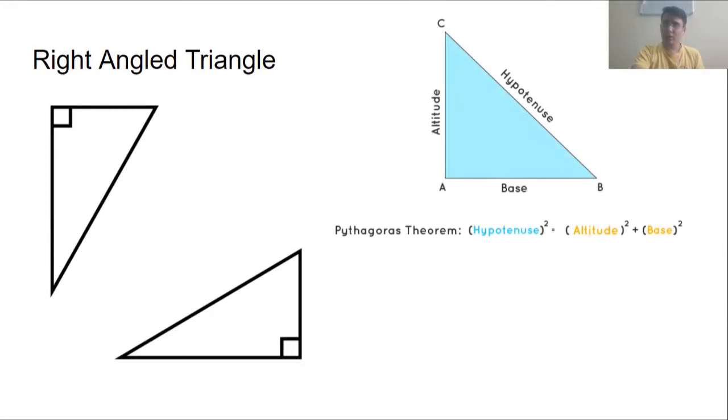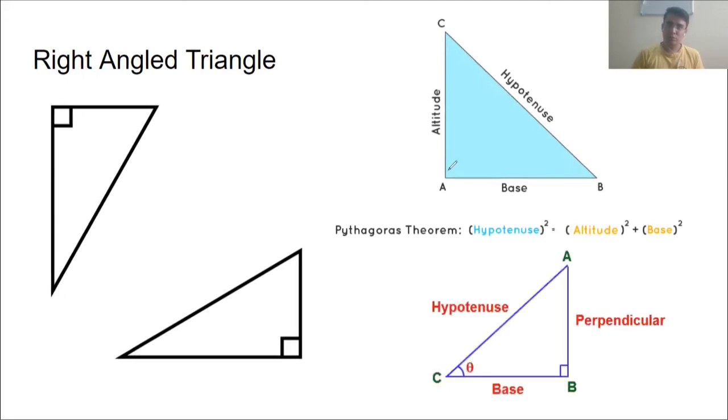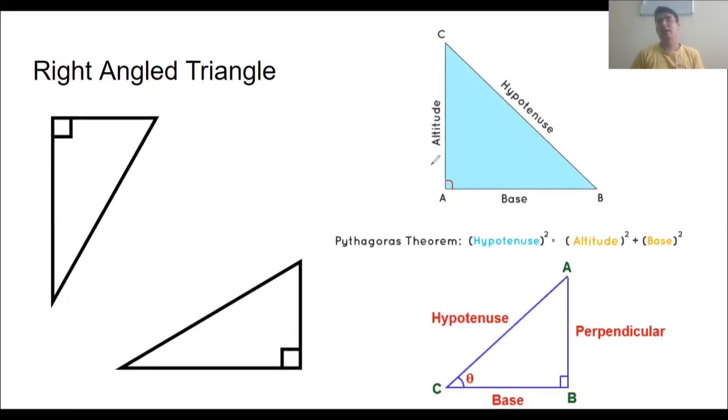So in a right angle triangle, this angle A is 90 degrees. Let me just mark it for you. Angle A is 90 degrees and we know this relationship - Pythagoras theorem. So hypotenuse square equals altitude square plus base square. This relationship will be useful in case we have two sides and we need to find the third side.